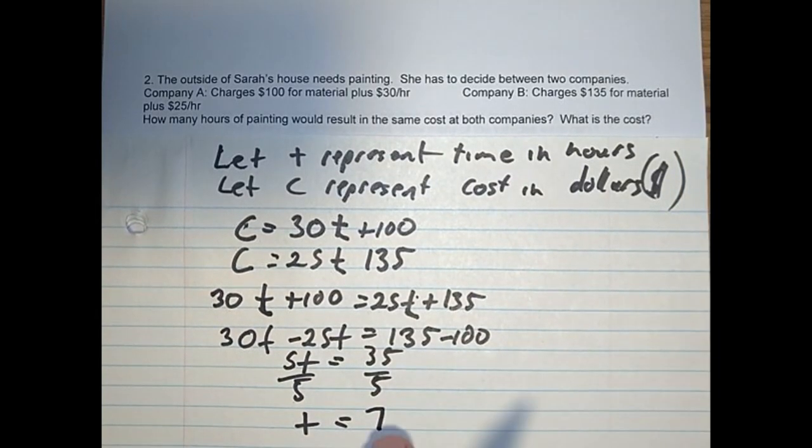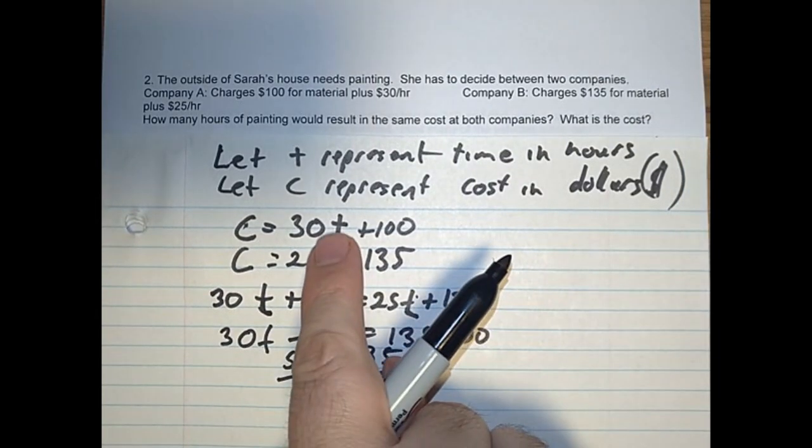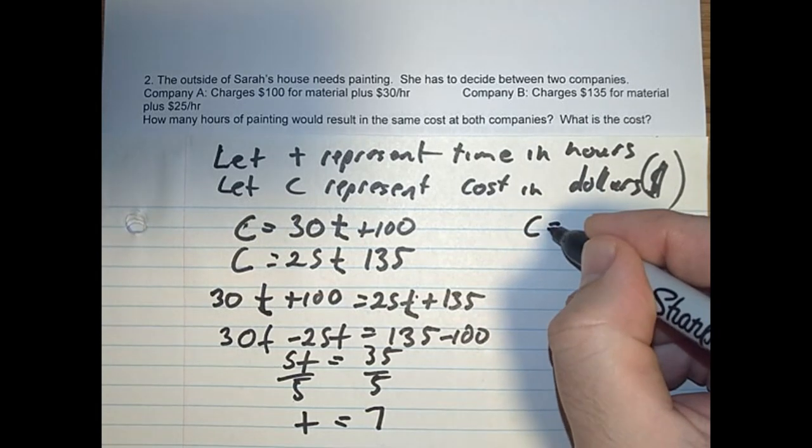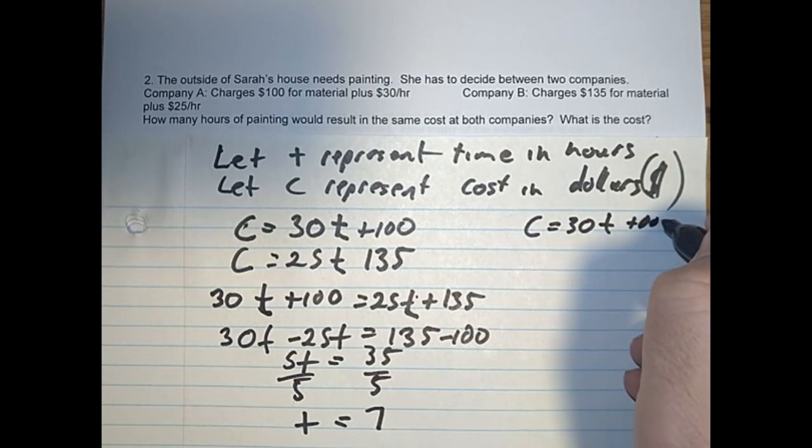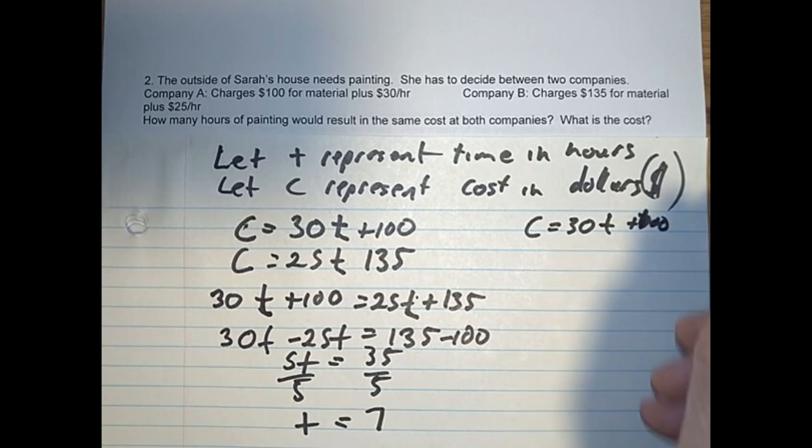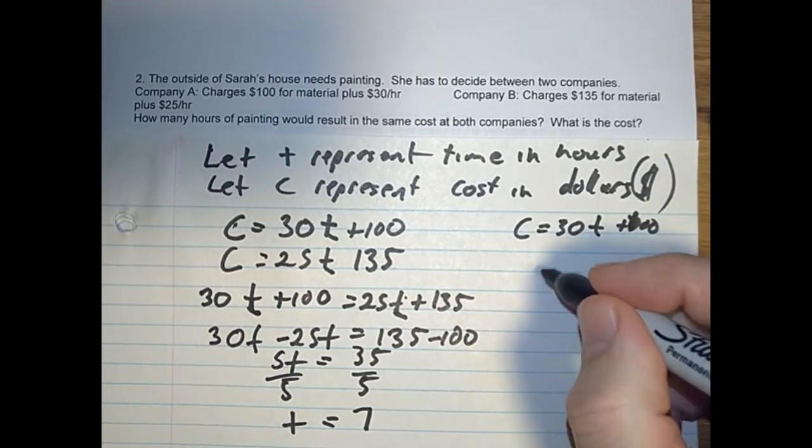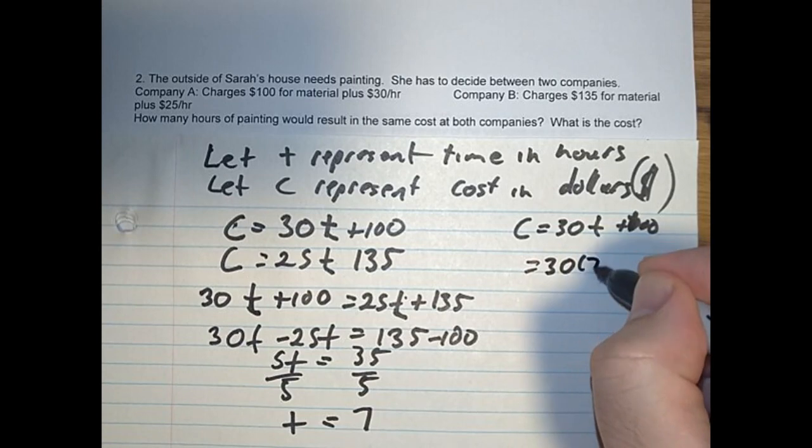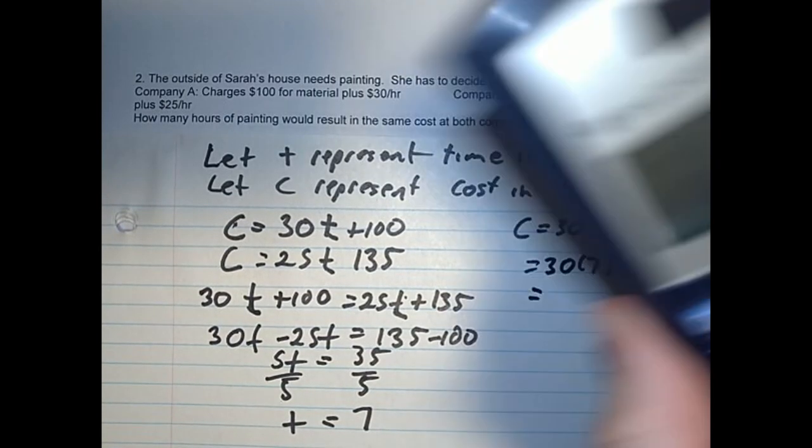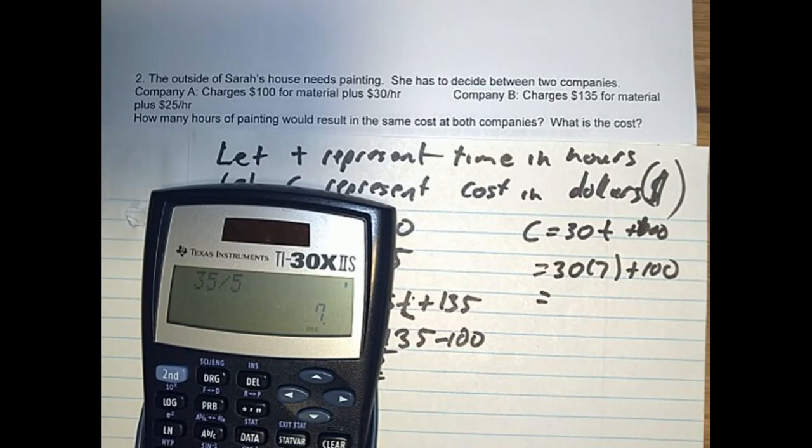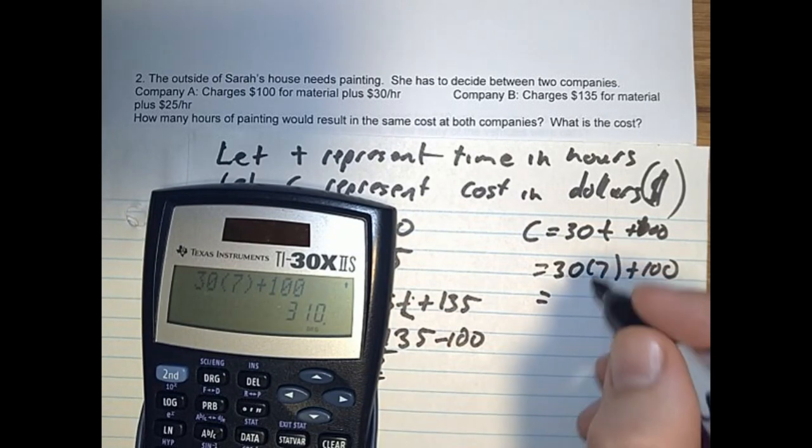We're going to plug 7 back into the first equation. C equals 30T plus $100. We're going to put 7 in for T. So $30 times 7 plus $100. Going to our calculator, 30 times 7 plus $100, and you get $310.